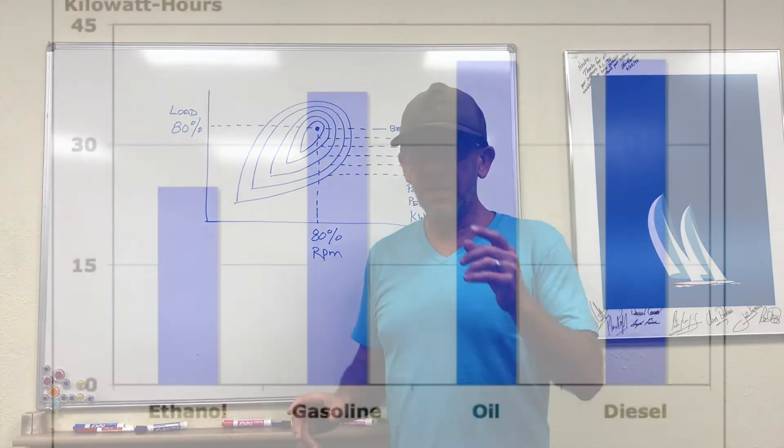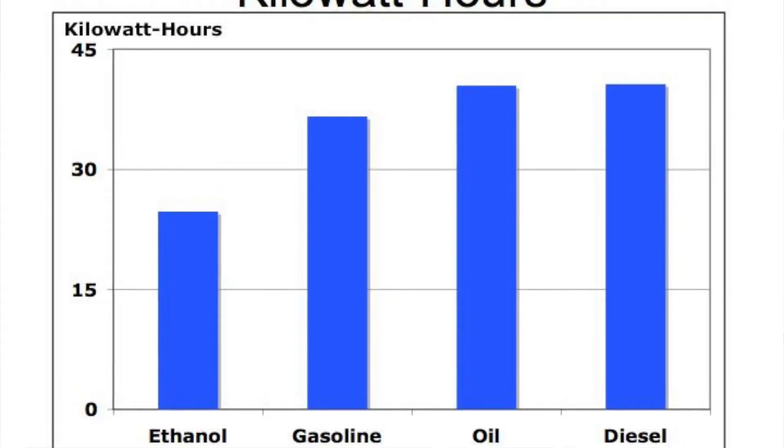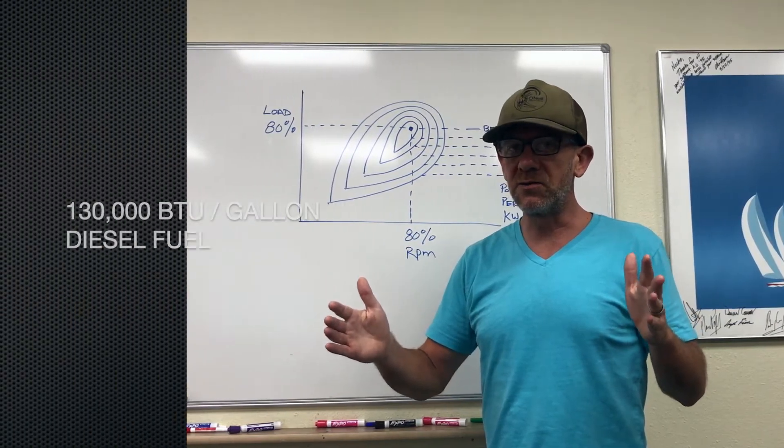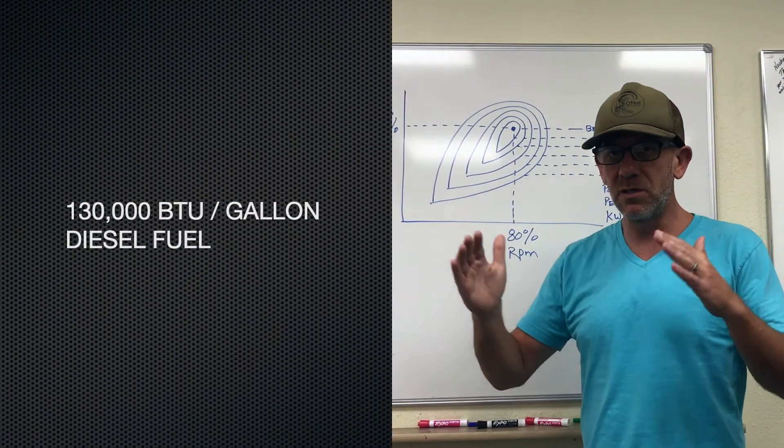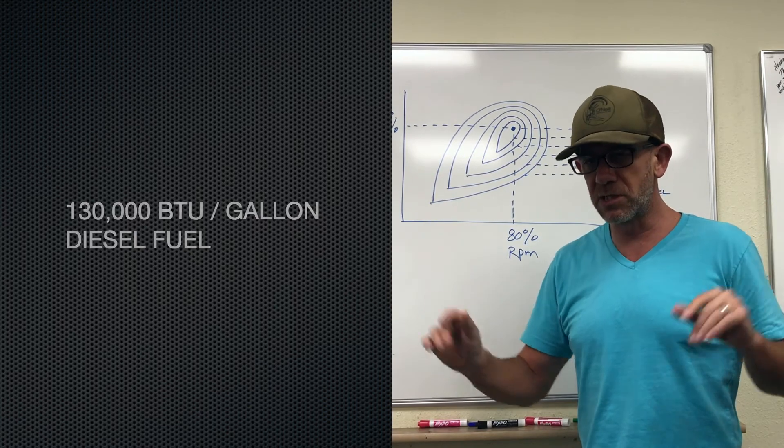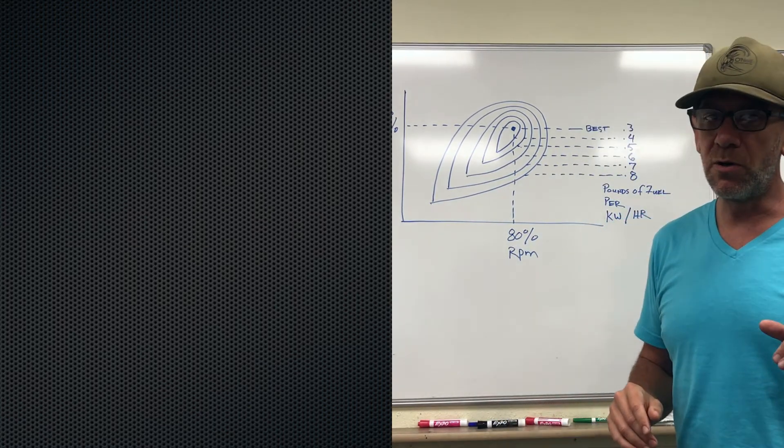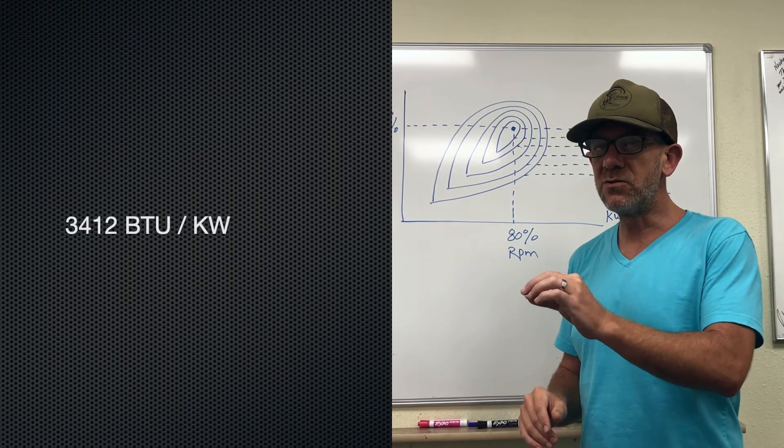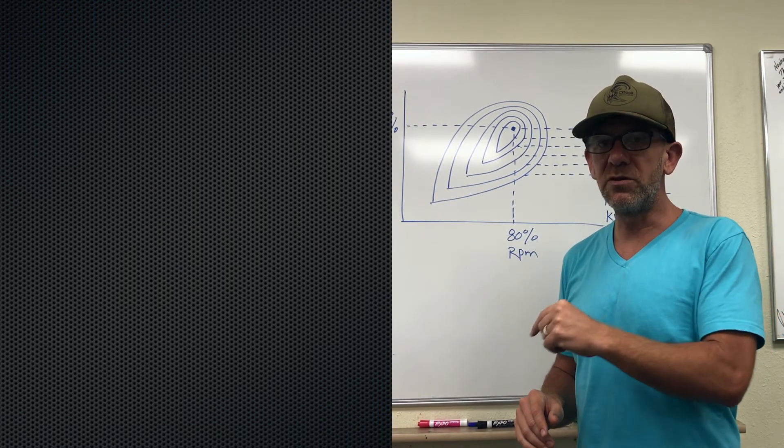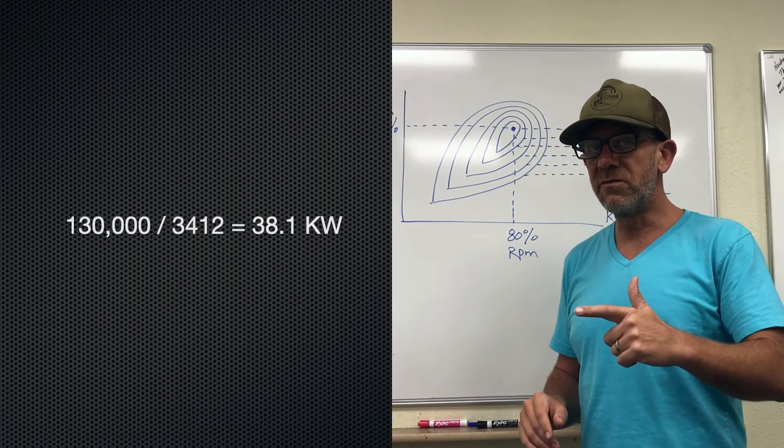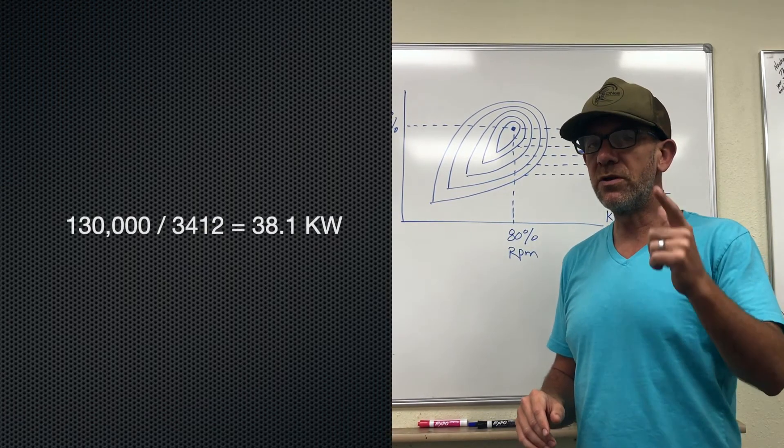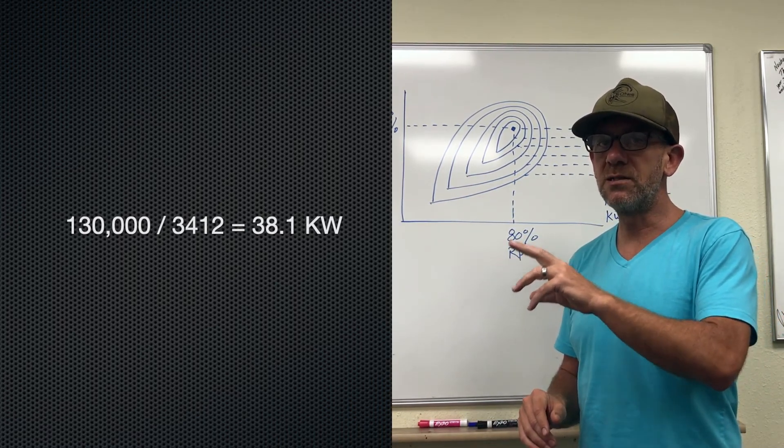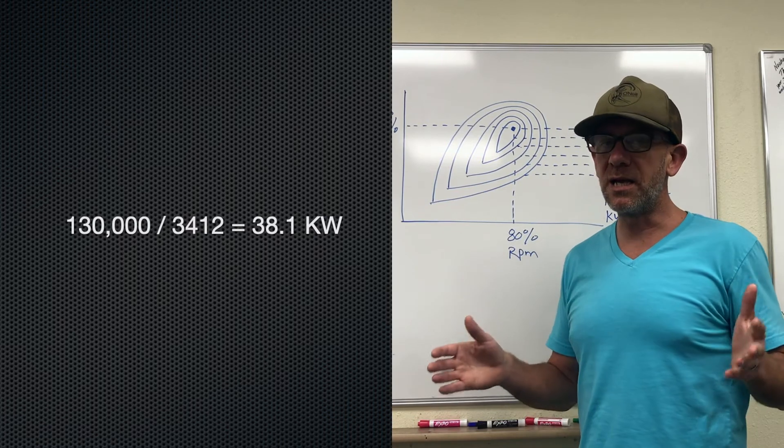What we need to then look at is how much power is available in a gallon of diesel fuel, and we know that's somewhere around 130,000 BTU. It's going to vary a little bit from one diesel fuel to the next, but that's close enough. Now we also know that there's 3,412 BTUs in a kilowatt. So if you divide 130,000 by 3,412, what you end up with is 38.1 potential kilowatts of power in that gallon of diesel fuel.